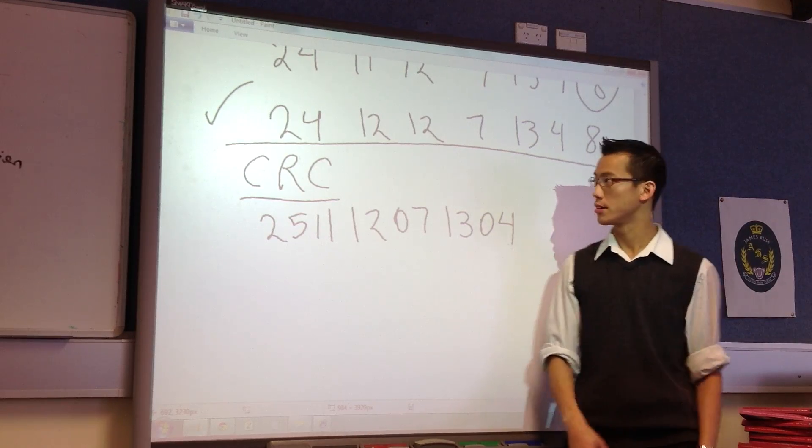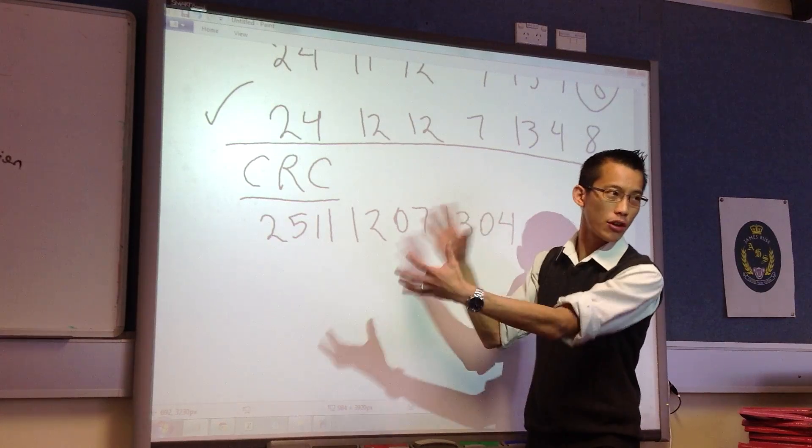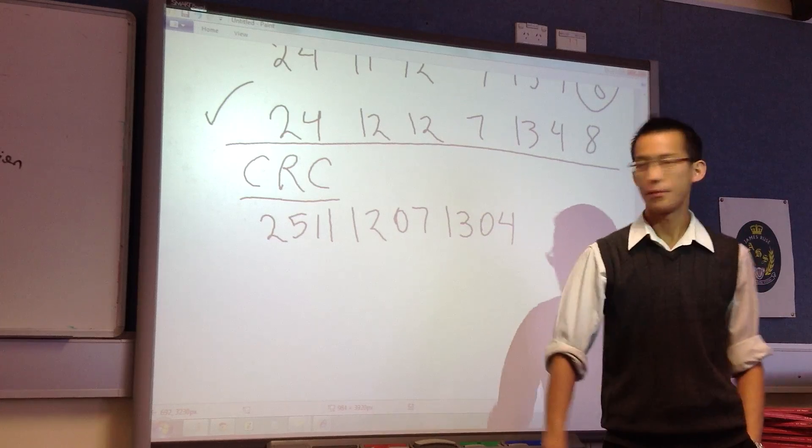So this is what the Cyclic Redundancy Check does. Instead of adding them all up, it just puts them all together in one number, in sequence, and then it does something very similar. It divides.